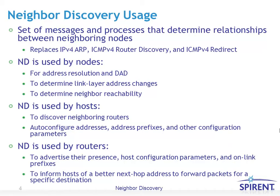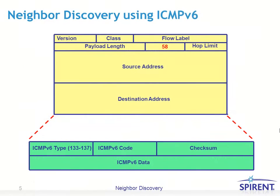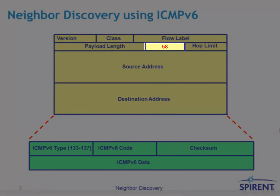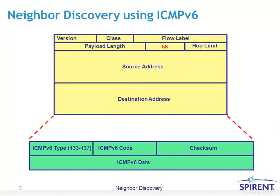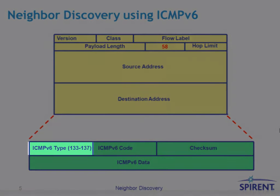Neighbor Discovery is also used by routers to advertise their presence, announce host configuration parameters, on-link prefixes, and to inform hosts of a better next-hop address for a specific destination. Neighbor Discovery uses the ICMPv6 control plane protocol to exchange its messages. The IP header has the next header field set to 58, indicating ICMPv6, followed by the ICMP common header — type, code, and checksum — and ICMP type messages 133 through 137 are used for Neighbor Discovery.